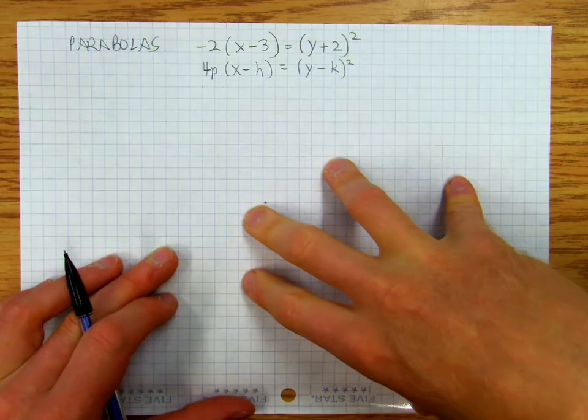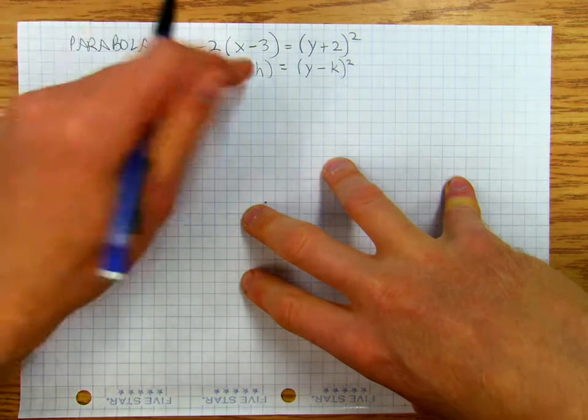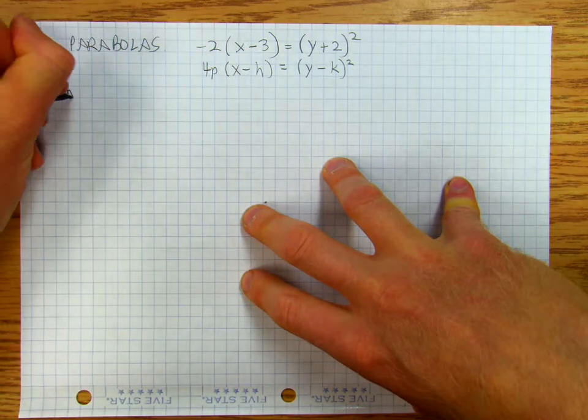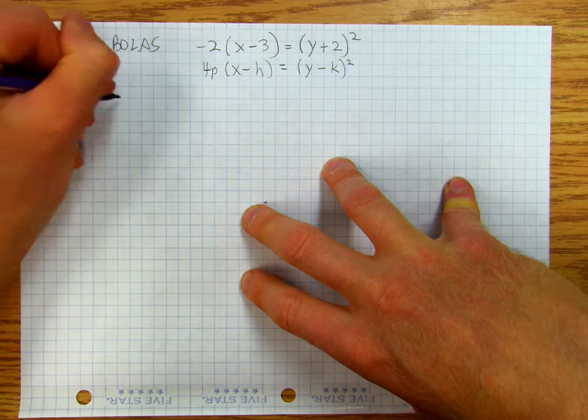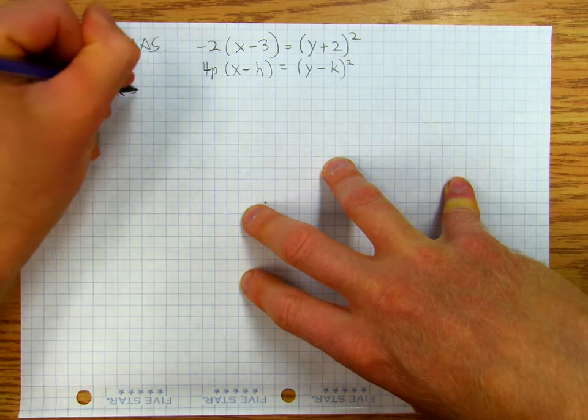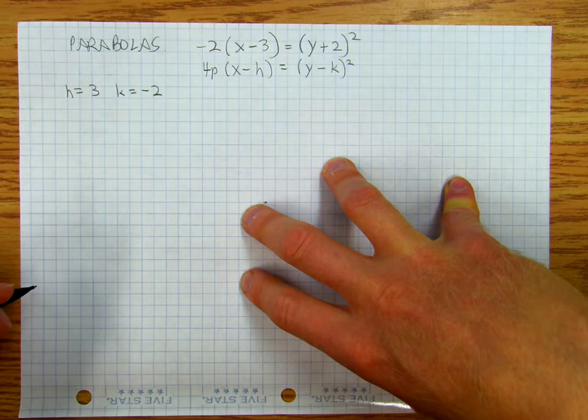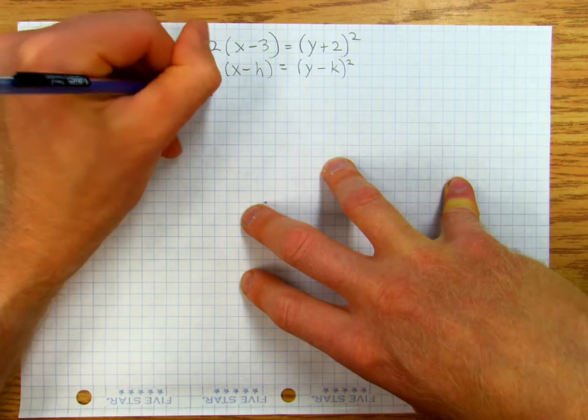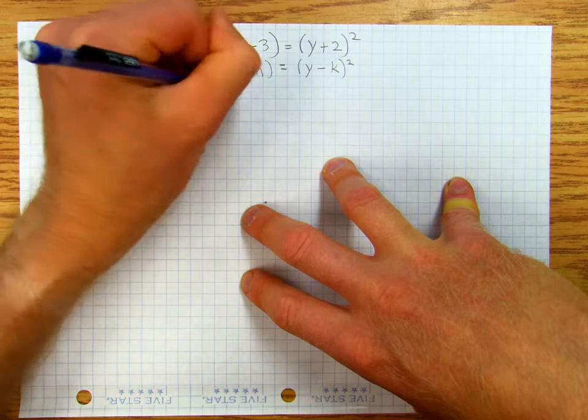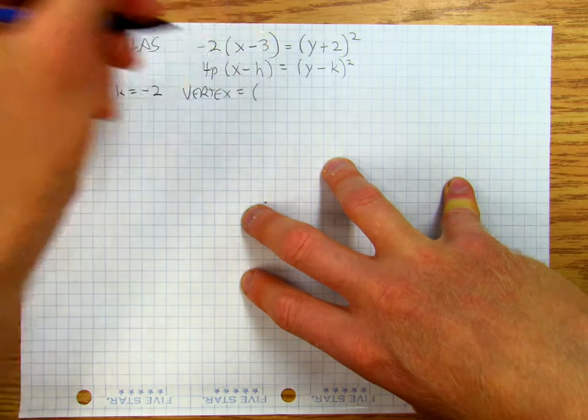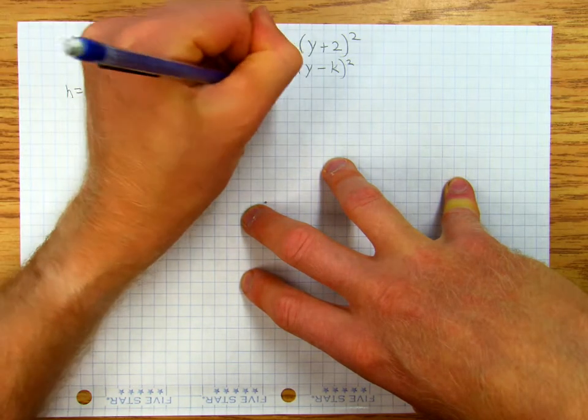Right, and so from this I see that my h is equal to 3 and my k is equal to negative 2. So my vertex is equal to 3, negative 2.